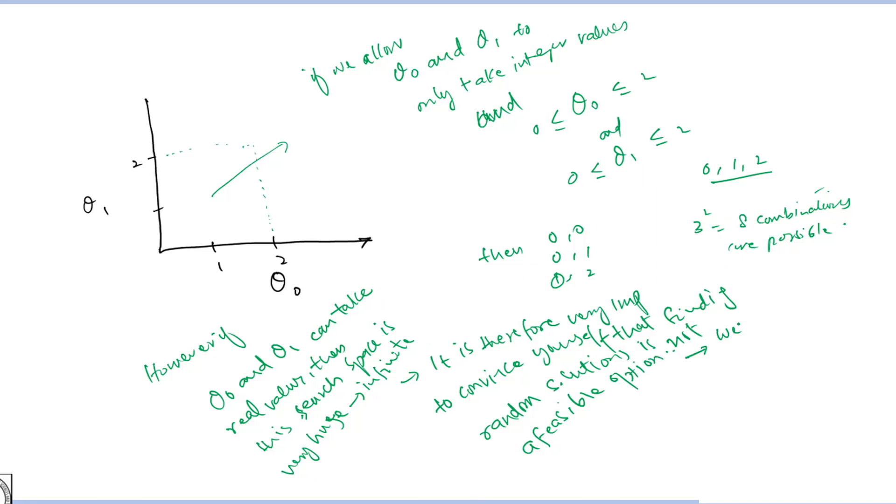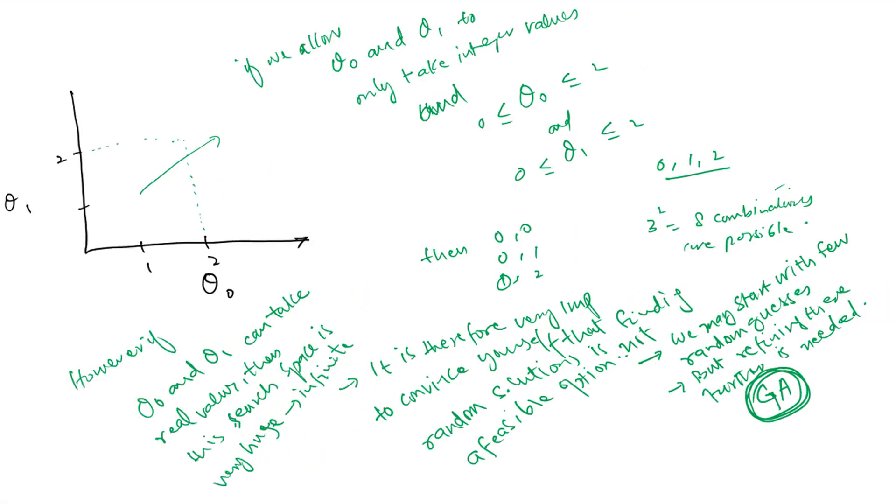However the good news is that we can start from random initialization and refine this iteratively in a systematic way. This is where genetic algorithm comes into picture. We will see the methodology of genetic algorithm in detail in the next units.